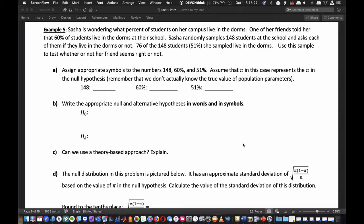Sasha randomly selects 148 students at the school and asks each if they live in the dorms. She gets a positive result from 76 out of 148 students, which is 51%. This is contrary to the 60% she was told by her friend. Use this sample to test whether or not her friend seems right. Keep that key sentence in mind.